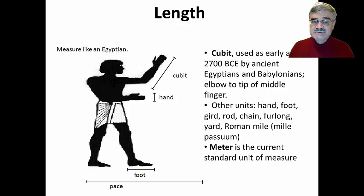What you notice about measurements of length is that they were based on body parts. The cubit, which you've heard of, is actually the distance between the elbow and the tip of your middle finger. You also have the hand, we have the foot, the gird, the rod. What we now call the mile was initially based on the Roman mile, the mili pasem, which was a thousand paces. Turns out to be approximately what we now use as a mile. The current standard measure of length is the meter, which we'll talk about more in one of the next slides.